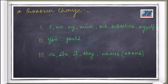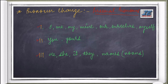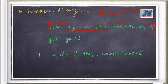Now comes pronoun change. We are talking about personal pronouns. Personal pronouns are of three types: first person, second person, and third person. First person pronouns are I, me, my, mine, our, ourselves, myself — everything related to me. You can think of it as: I give importance to myself first, so things related to me are first person pronouns.